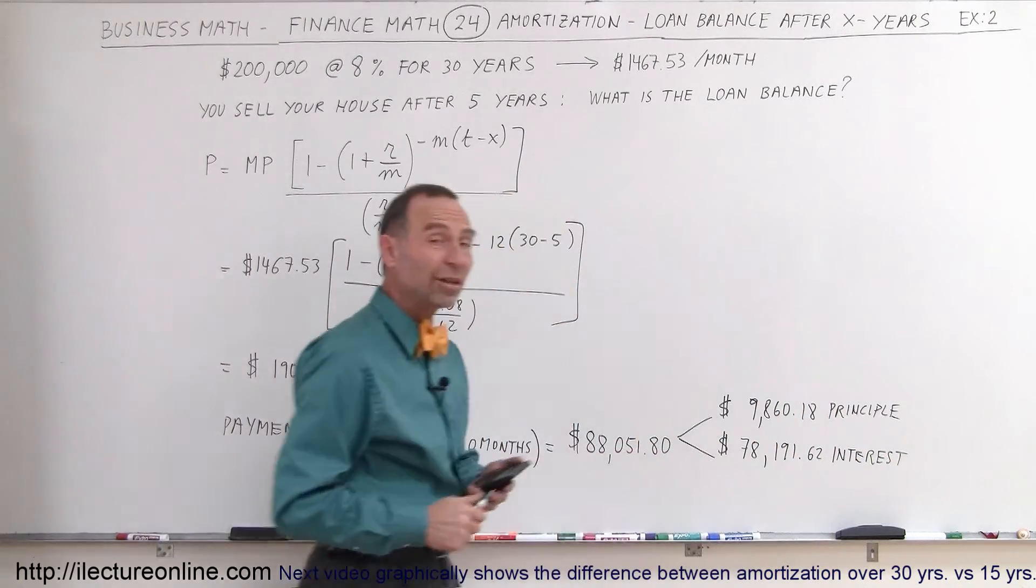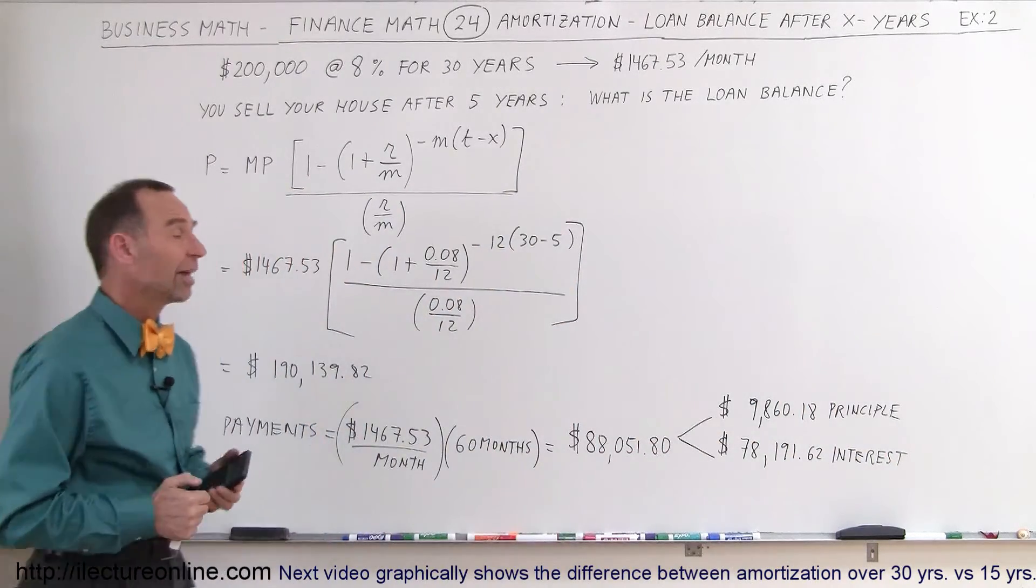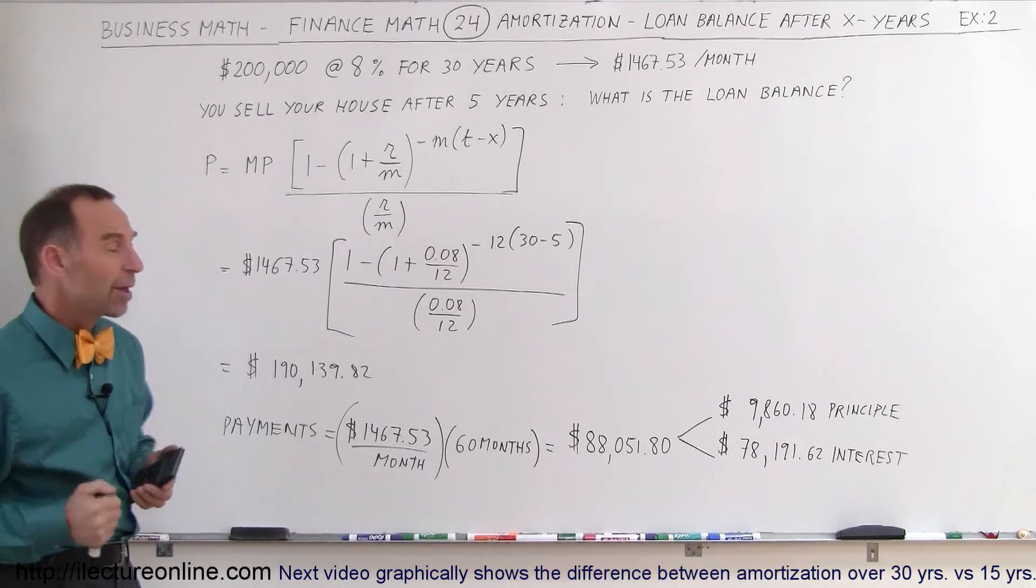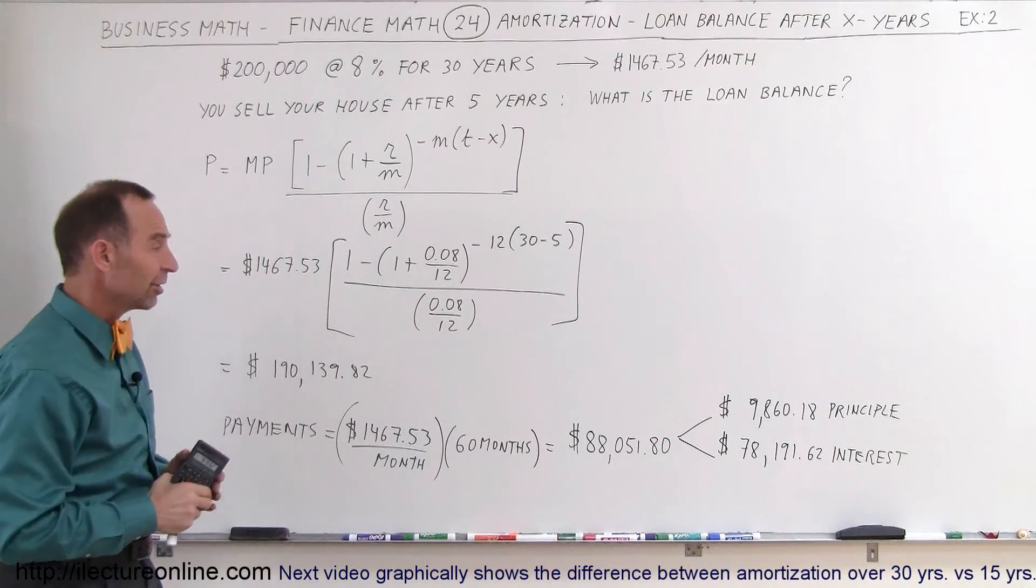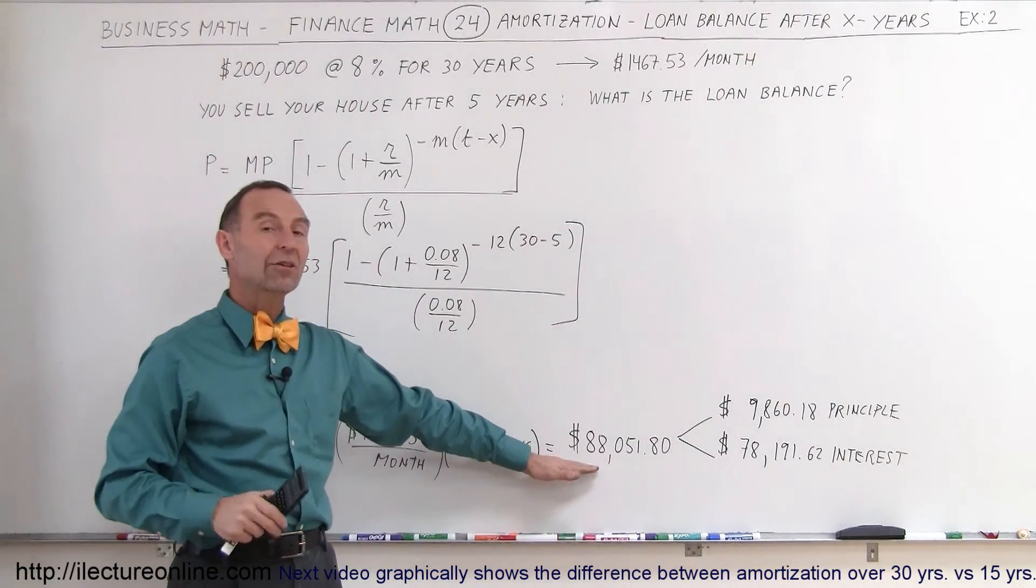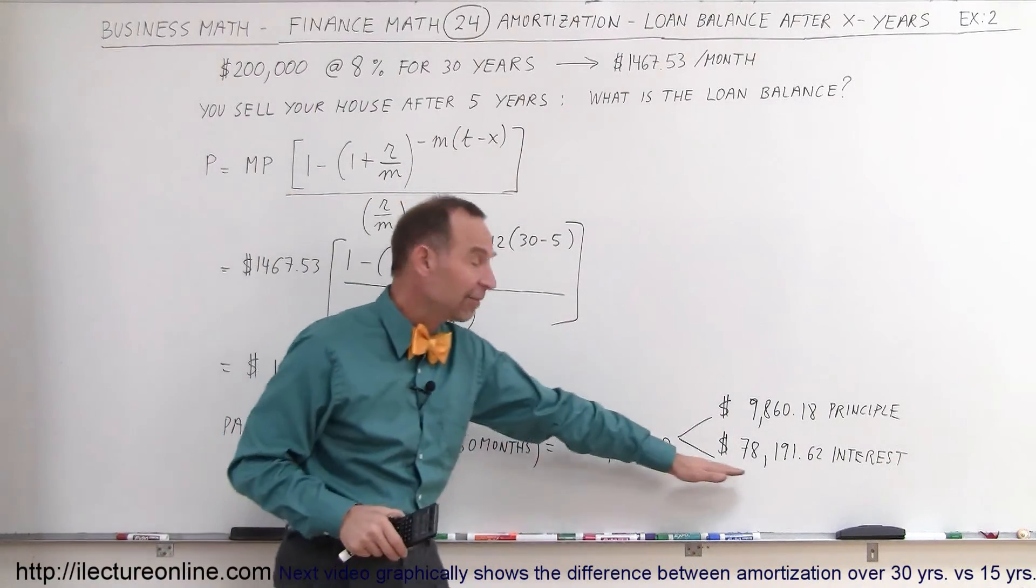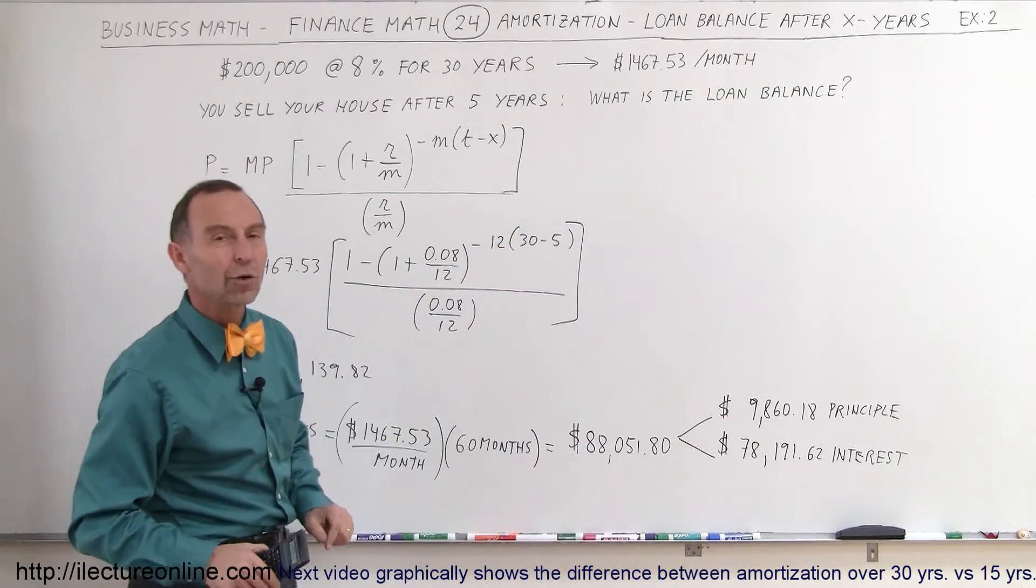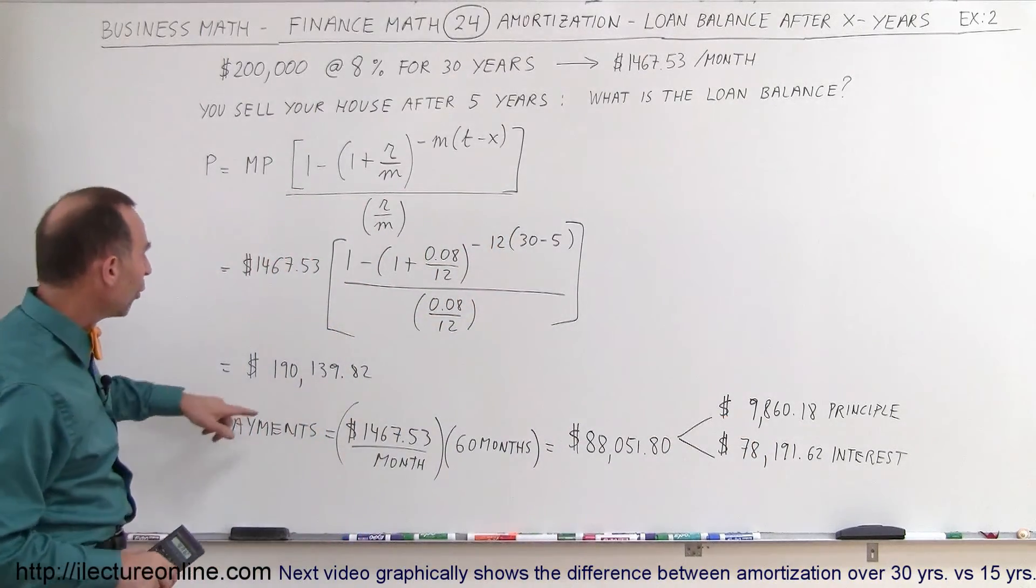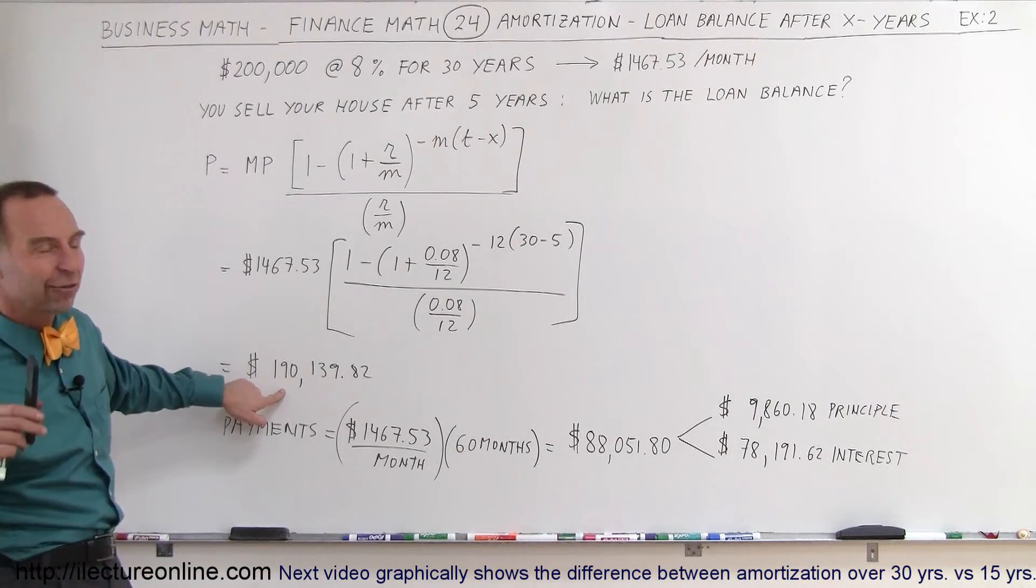So notice that when the interest rate goes up, all kinds of bad things happen. It's much more difficult to pay off your loan. After five years of making very high payments of almost $1,500 a month and paying $88,000 to the bank, the bank gets to keep $78,000 of that. And only $9,800 goes to paying off your loan so that you still owe the bank over $190,000 after five years of payments.